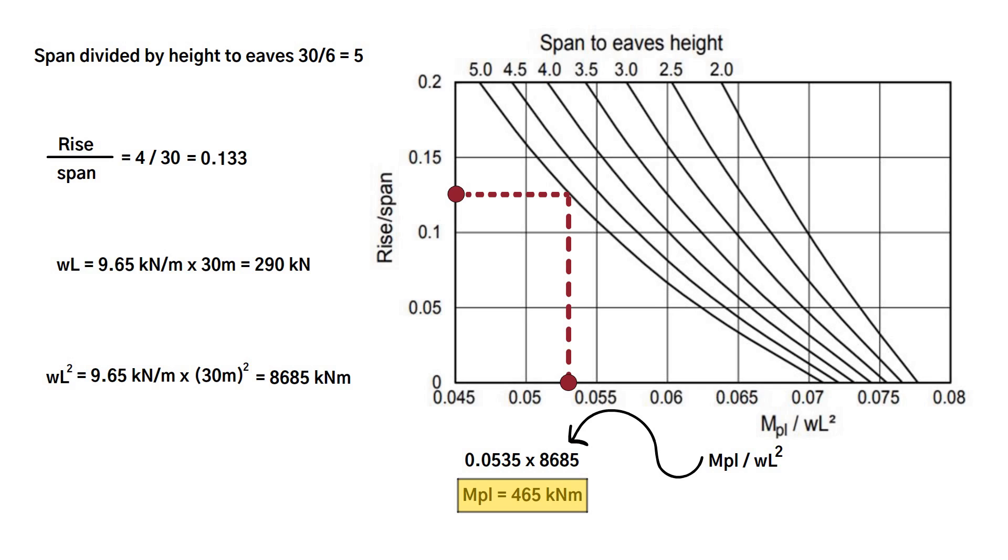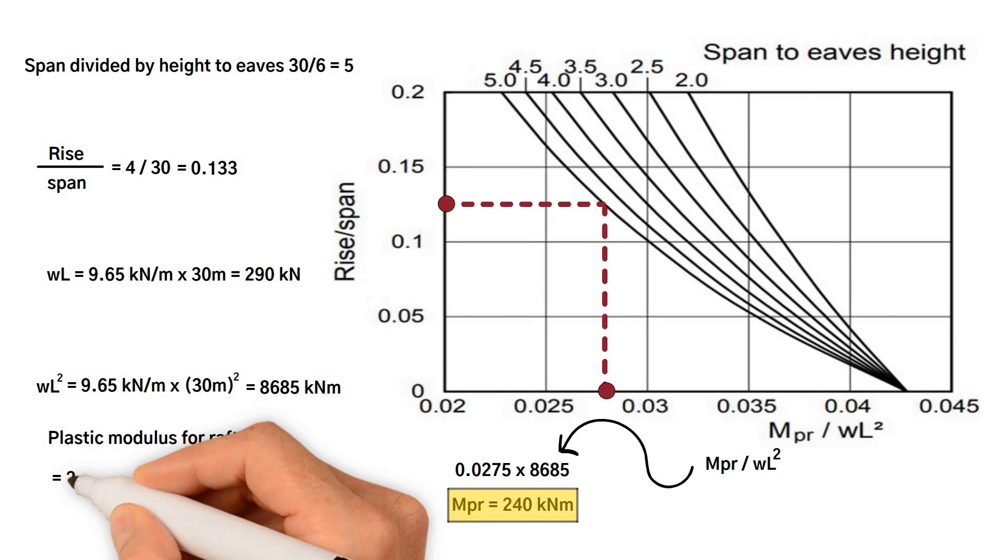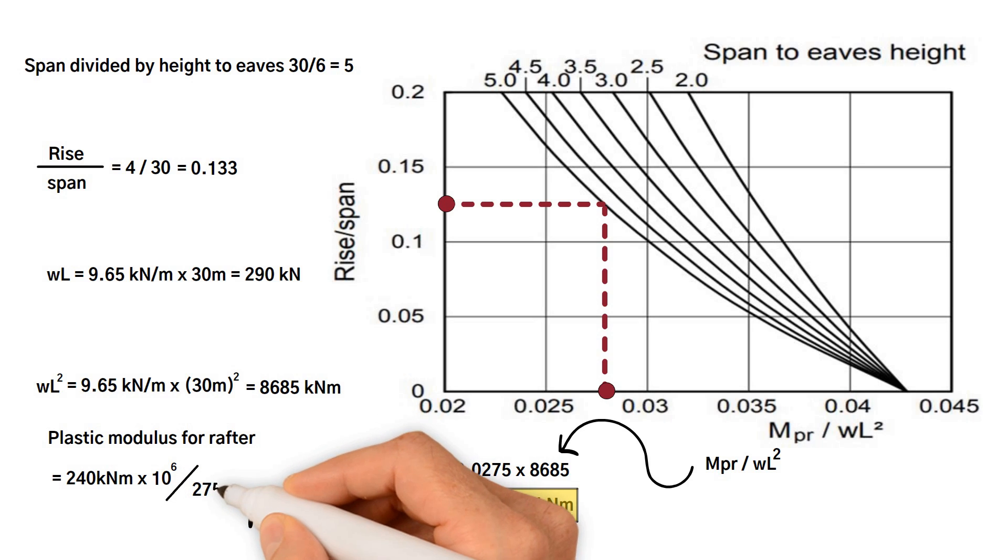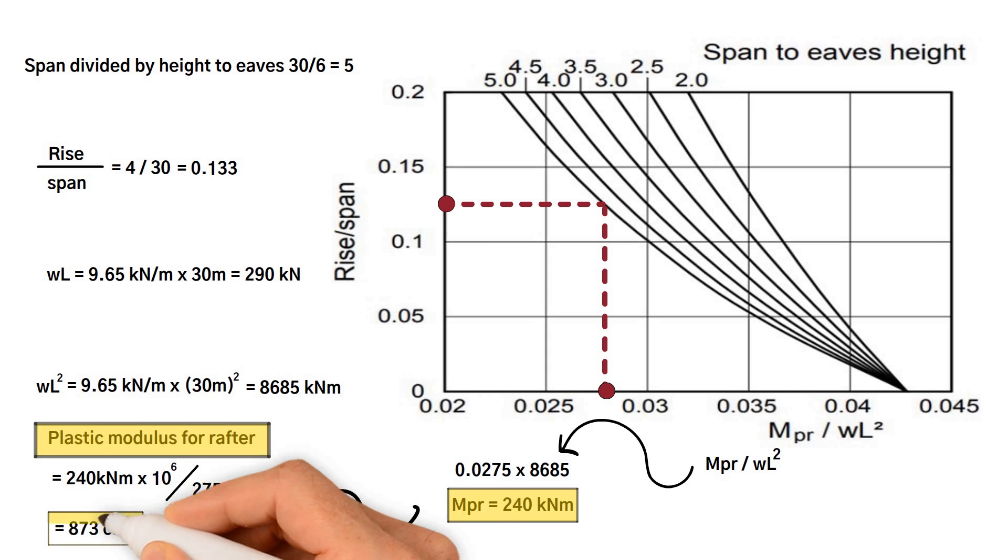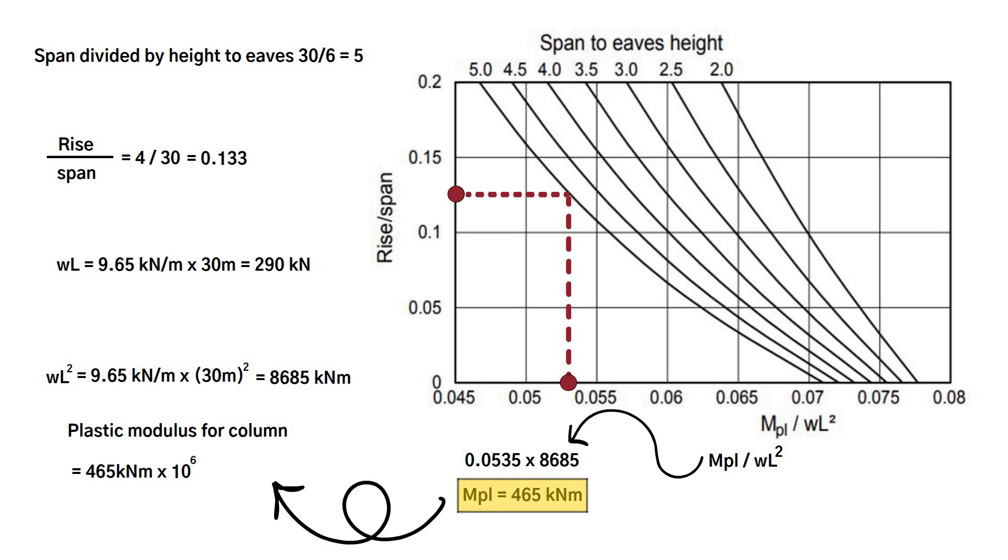Now we should be able to determine the plastic modulus of both the rafter and column. We will use a yield strength of 275 newton per millimetre squared. As a result, the plastic modulus for the rafter equals 240 kilonewton meter times 10 to 6, divided by the yield strength 275. The result is going to be in millimetre cubed. However, as the units used in the table is by centimetre cubed, this should be divided by 1000, so we get 873 centimetre cubed. Similarly, the plastic modulus for the column equals 465 kilonewton meter times 10 to 6 divided by yield strength 275, divided by 1000, we get 1691 centimetre cubed.